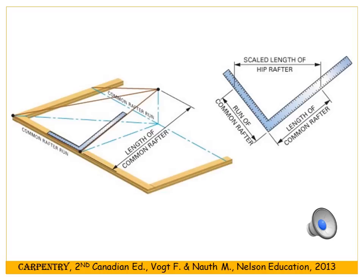This is because we're now working in three dimensions. The hip rafter is actually the diagonal of a box, going from the bottom corner to the opposite top corner. That will give you the length of the hip rafter.